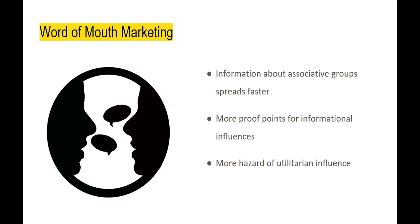There are more proof points for informational influences — when we get information from a peer group member, we can ask them more questions, we trust them more, and that information is much more influential than a product brochure or advertising. Of course, with word-of-mouth marketing, there is the negative side: the hazard of utilitarian influence, or peer pressure, when people feel they need a particular product in order to belong. The more a consumer relies on word-of-mouth and their peer group, the more both the positive and the negative influences are present.